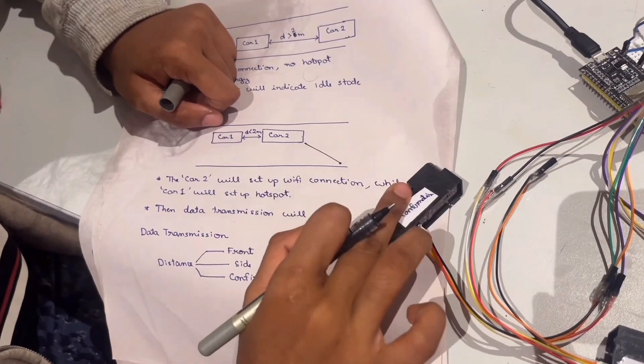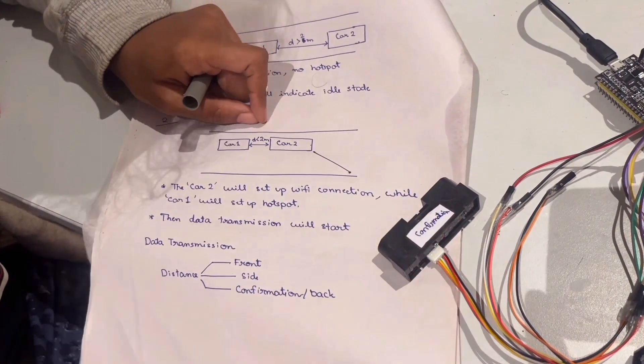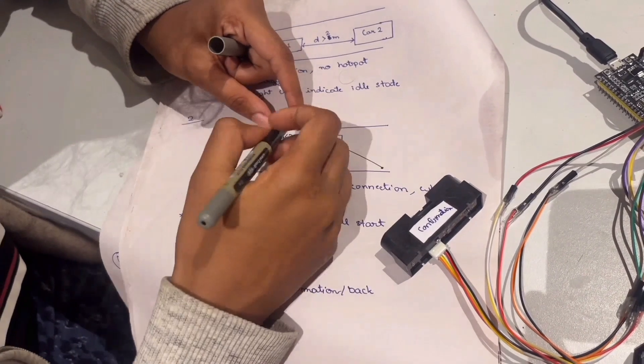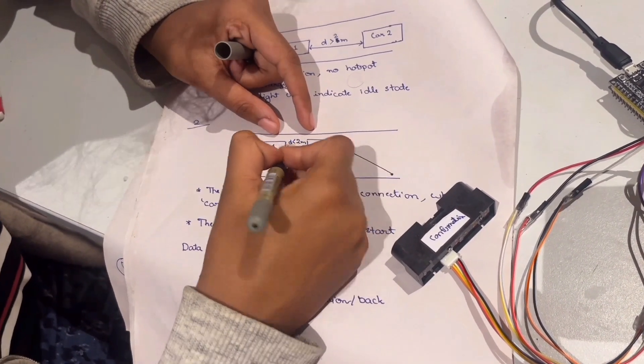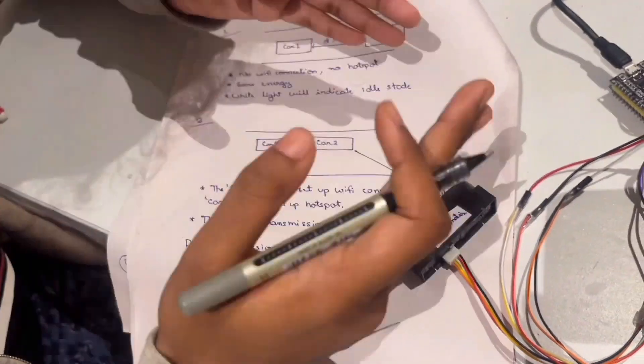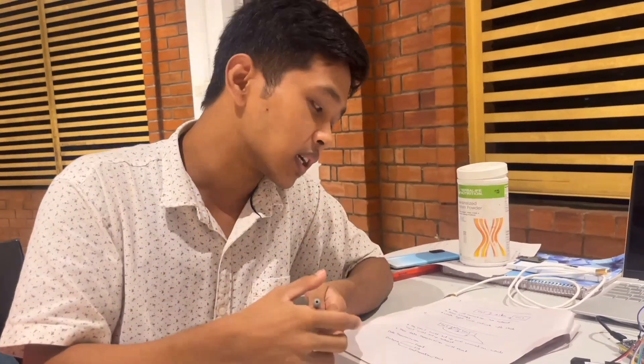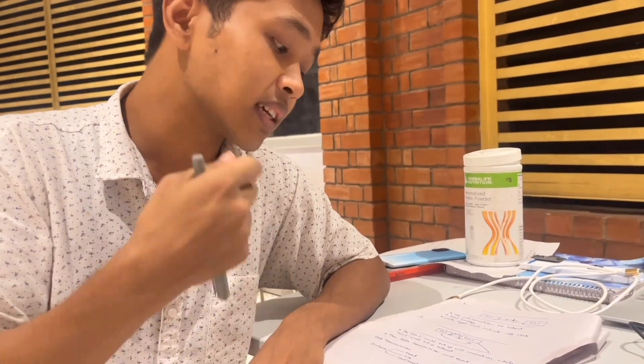After that is validated, we go to the last one, which is the confirmation sensor. This measures the back distance of car two. Once car two has done all the measurements, it sends all the data — the front distance, the side distance, and the confirmation distance — to car one.